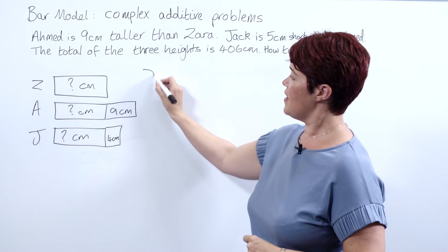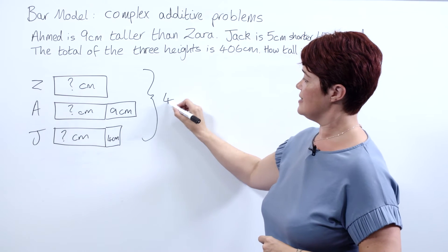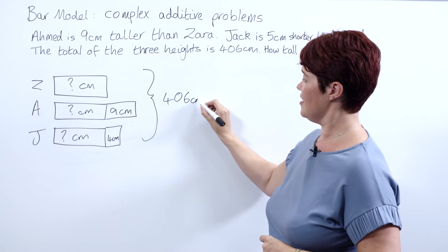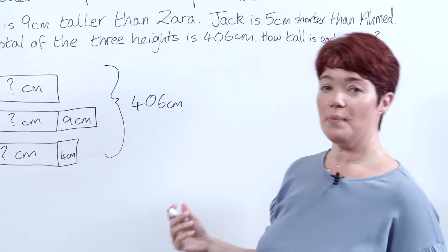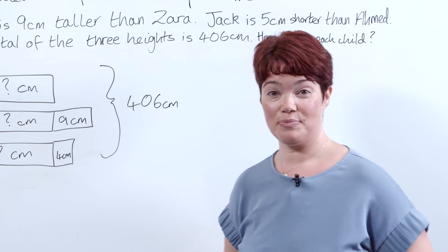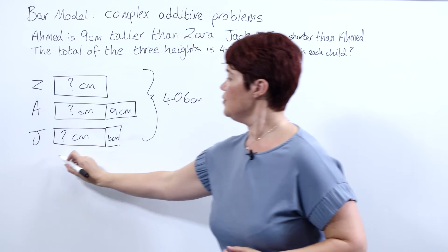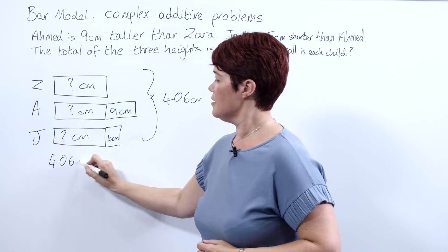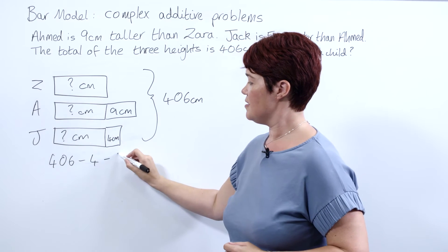We know the value of all their heights together is 406 centimeters, so now we can solve them as we have done in our additive problems before. So 406 take away our 4 centimeters and take away our 9 centimeters gives us 393 centimeters.